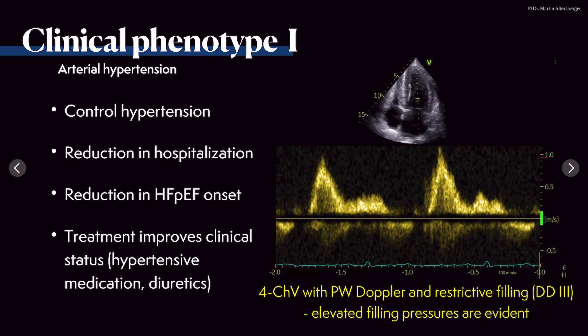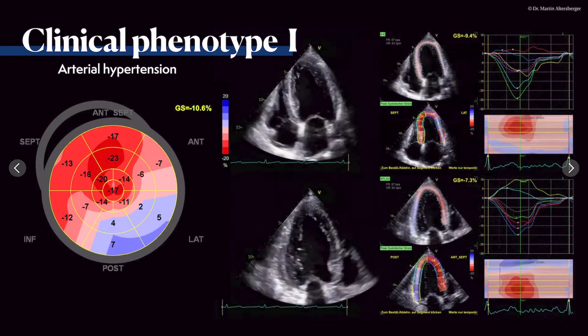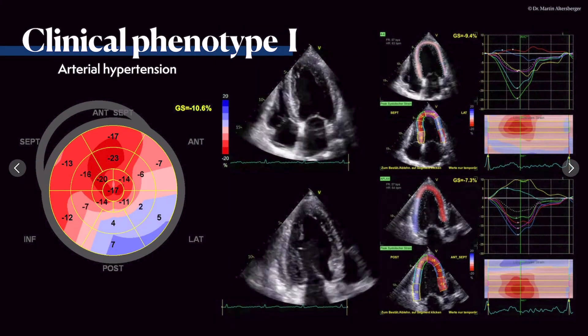What we have to do is control hypertension. If hypertension is controlled, reduction in hospitalization is evident - those patients do not have to be admitted as often. There is also a reduction in the onset of heart failure with preserved ejection fraction, and treatment improves overall clinical status. For this specific patient we lowered the blood pressure very carefully so that she stayed compliant, and over time we controlled her blood pressure and she felt overall much better.